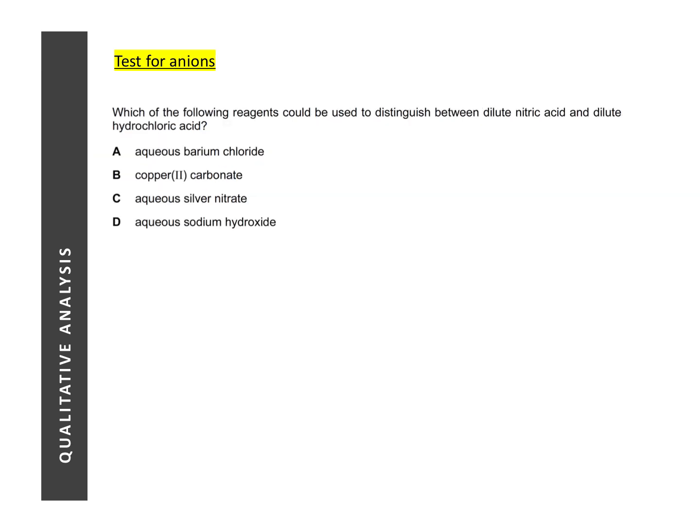For this question, the question is asking you to distinguish between two acids, nitric acid and hydrochloric acid. Now, essentially, the difference between the two acids would be the anions present. For nitric acid, we have nitrate. And for hydrochloric acid, we have chloride. So the question is essentially asking for a test that will identify only one of the ion. And right now, we can just recall the test for nitrate is to add aluminum foil with sodium hydroxide. And you warm and you will produce ammonia gas.